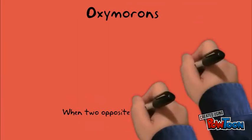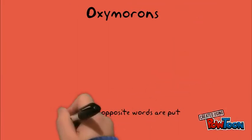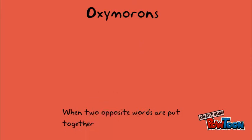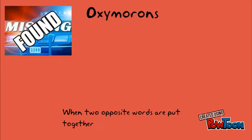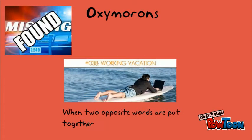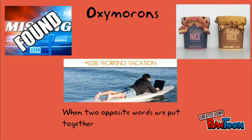Next are oxymorons. An oxymoron is when you put together two words that are opposites. Some examples are: found missing, working vacation, and awful mess.